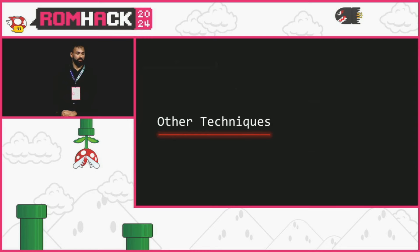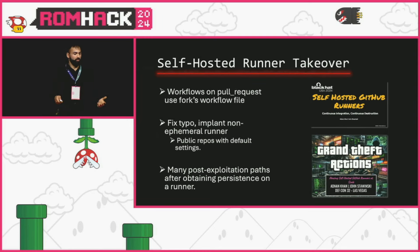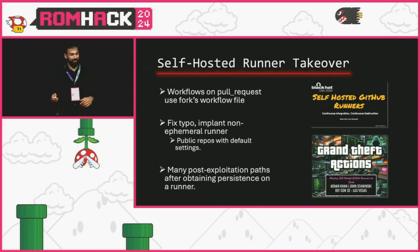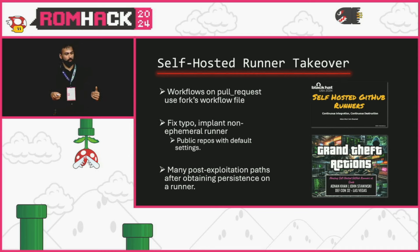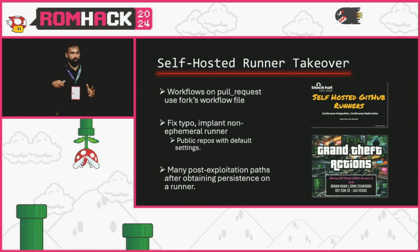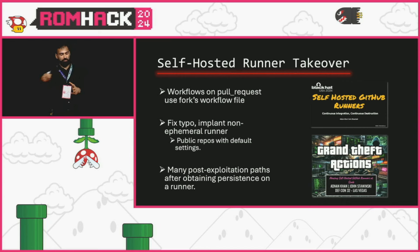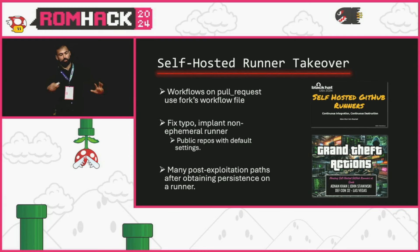There's also self-hosted runner takeover, which I covered at length at Black Hat. The general idea is that workflows on fork pull requests run in the context of the fork head branch's code. Someone can become a contributor by fixing a typo, and if default settings are in place, they can get arbitrary code execution and persist on attached non-ephemeral self-hosted runners, opening up a whole range of attack paths.